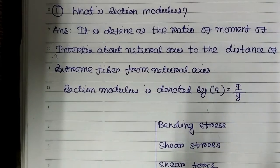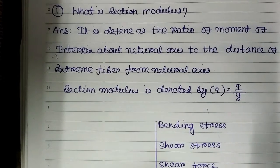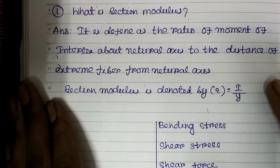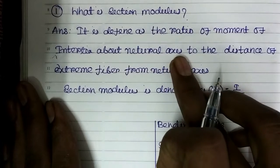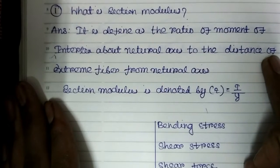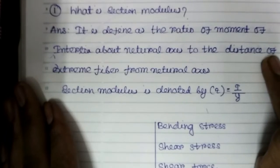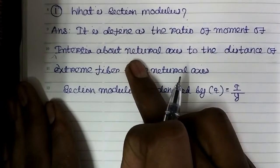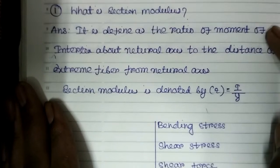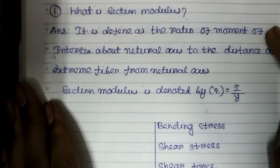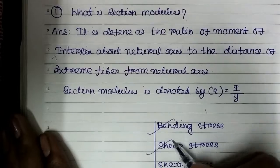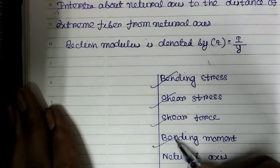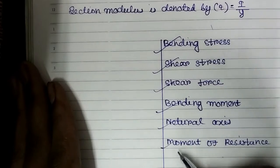The first question is: what is section modulus? It is defined as the ratio of moment of inertia about the neutral axis to the distance of the extreme fiber from the neutral axis. Terms like neutral axis, extreme fiber, and moment of inertia may be unknown to you, so through this question I'm going to explain bending stress, shear stress, shear force, bending moment, neutral axis, and moment of resistance.